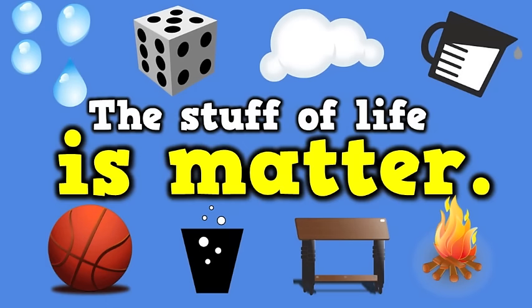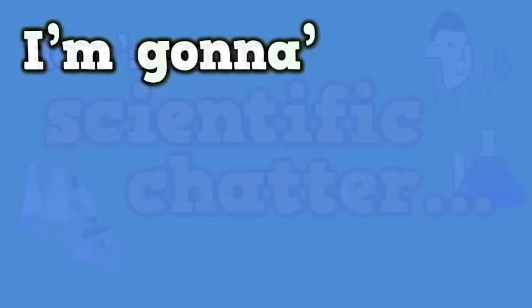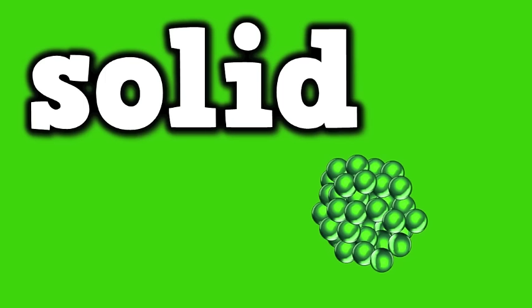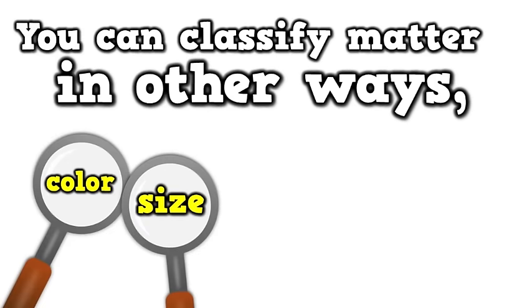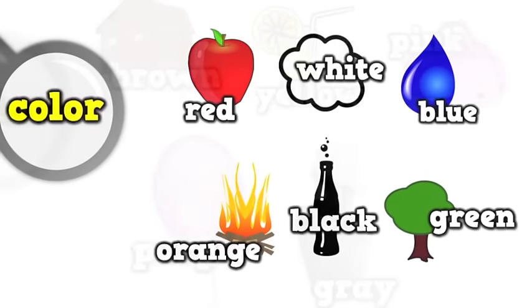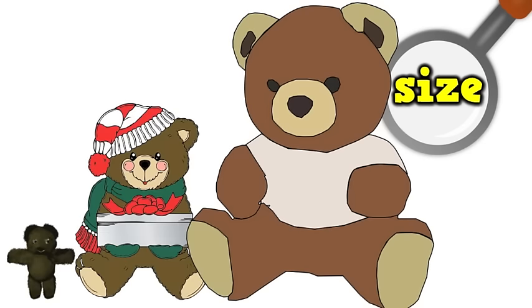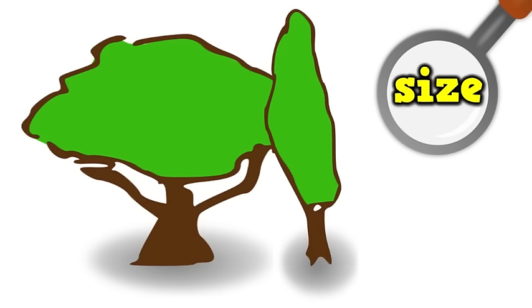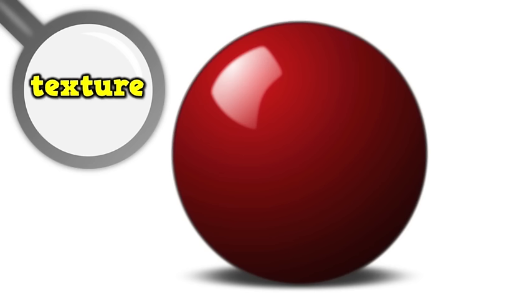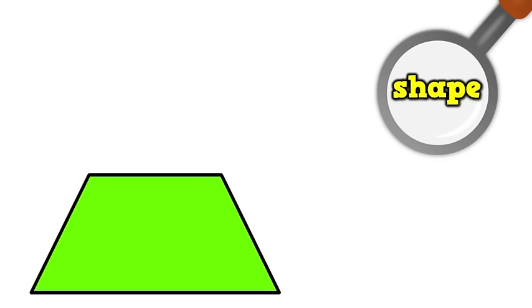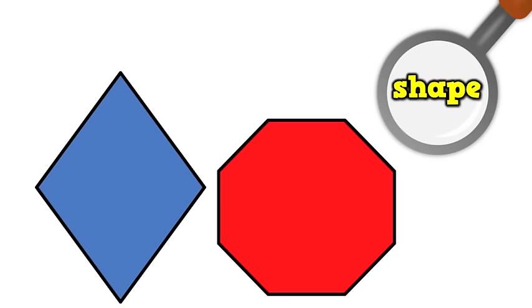The stuff of life is matter. Now here's some scientific chatter — I'm gonna give it to you nice and straight. When it comes to matter, there are three states: solid, or liquid, or gas. You can classify matter in other ways — like by color, or size, or texture, or shape. Like color: red, white, blue, orange, black, green, brown, yellow, pink, purple, gray. Like size: big, small, or medium, skinny or wide, thick or thin. Like texture: spiky, or furry, or smooth, or bumpy, or soft, or rough, or lumpy. Like shape: square, circle, rectangle, star, oval, or triangle, trapezoids and hexagons, diamonds and octagons.